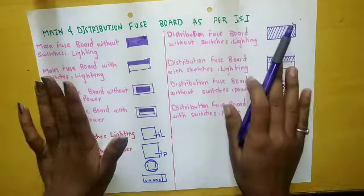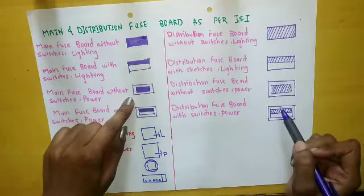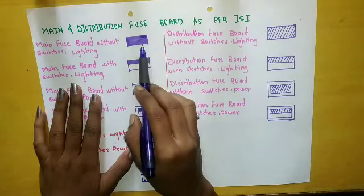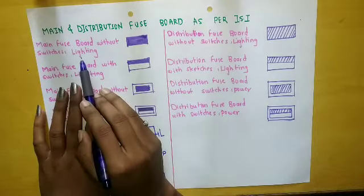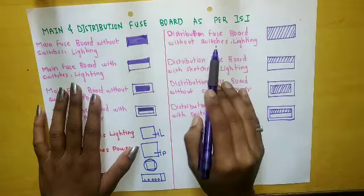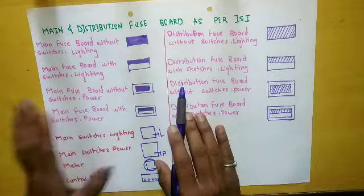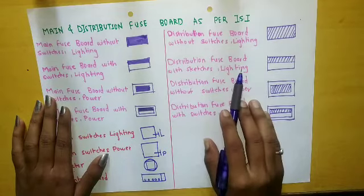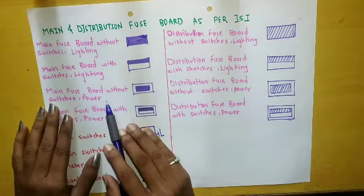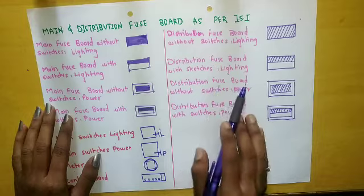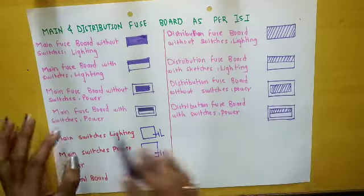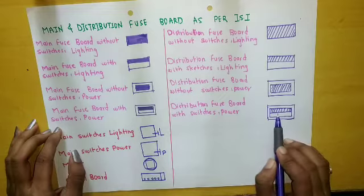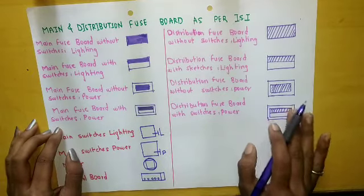To understand these symbols, just look at them — they are quite similar but the difference is in the lines: one has lines and the other is completely dark. Main fuse board without switches lighting — this is the symbol. Distribution fuse board without switches lighting — this is the symbol. Main fuse board with switches and lighting — this is the symbol. Distribution fuse board with switches lighting — this is the symbol. Main fuse board without switches power, distribution fuse board without switches power, main fuse board with switches power, distribution fuse board with switches power — just consider the differences and remember the symbols accordingly.